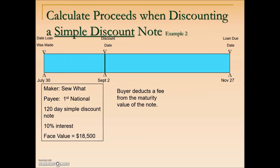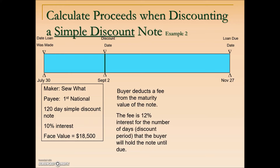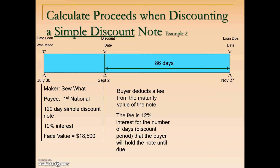They are going to sell this note. A bank agrees to buy it but will deduct a fee. Whenever there is an early cashing out of a note, it is discounted regardless of its origin — this one started as a discount note, but before the maturity date it is still discounted. The bank is charging a 12% discount rate for the number of days it will hold the note. The difference between September 2nd and November 27th turns out to be 86 days remaining to the maturity date.